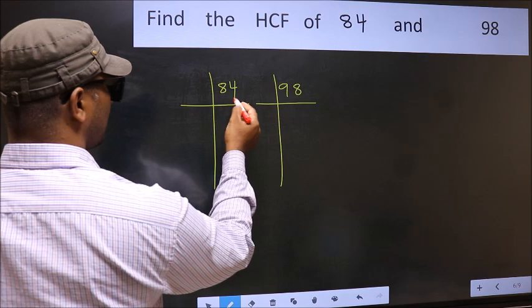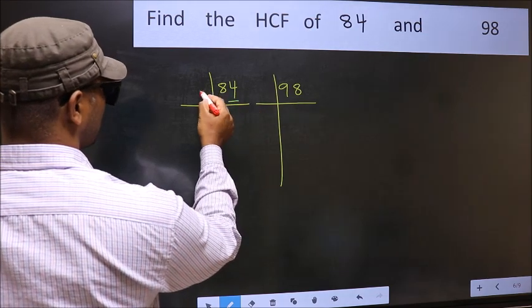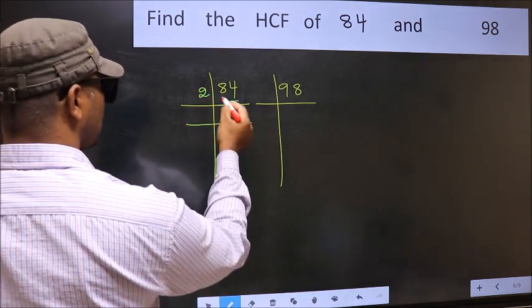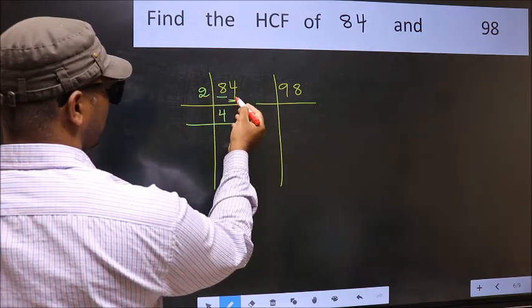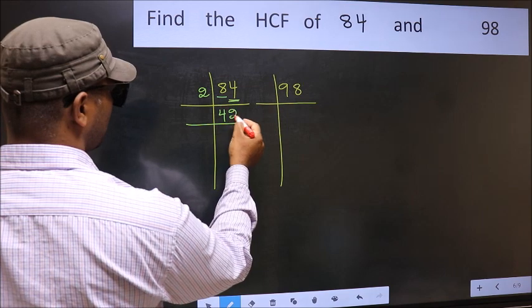In this number, last digit 4 is even, so take 2. First number 8, when do we get 8 in 2 table? 2 times 4 is 8. The other number 4, when do we get 4 in 2 table? 2 times 2 is 4.